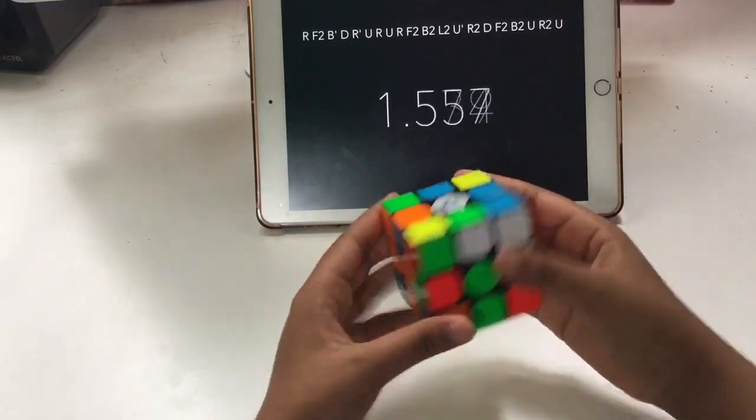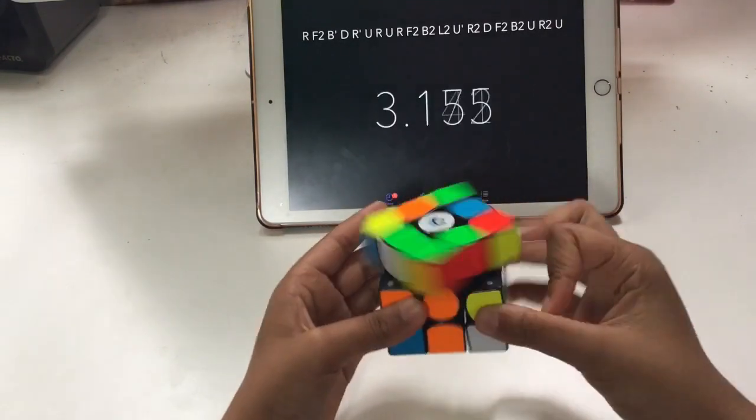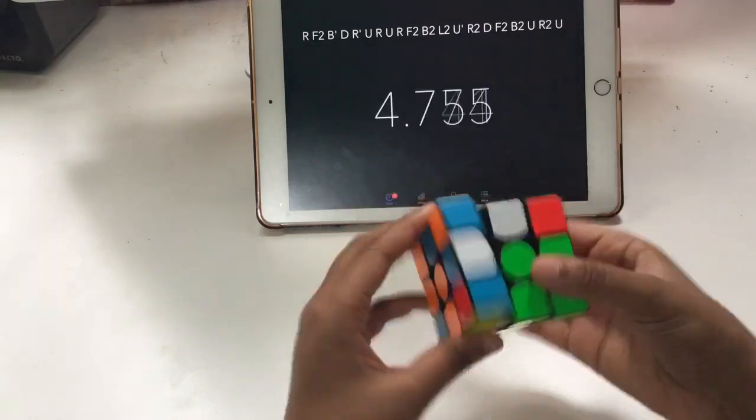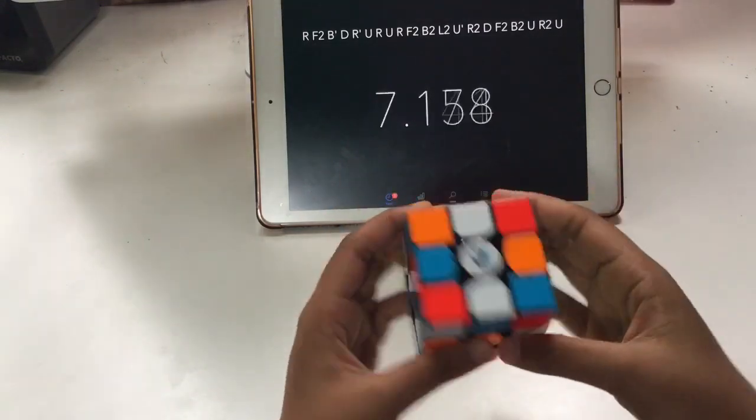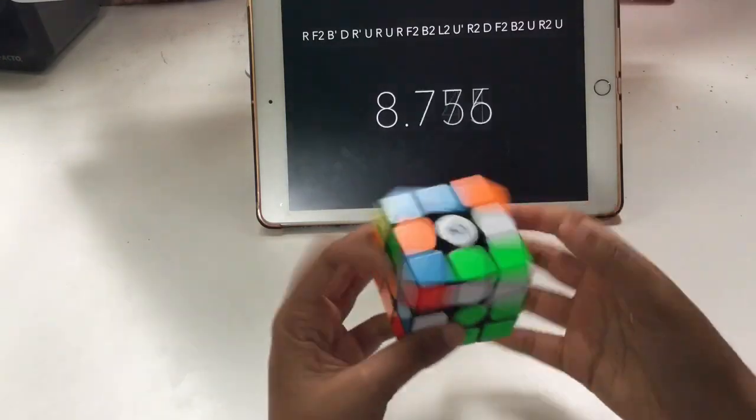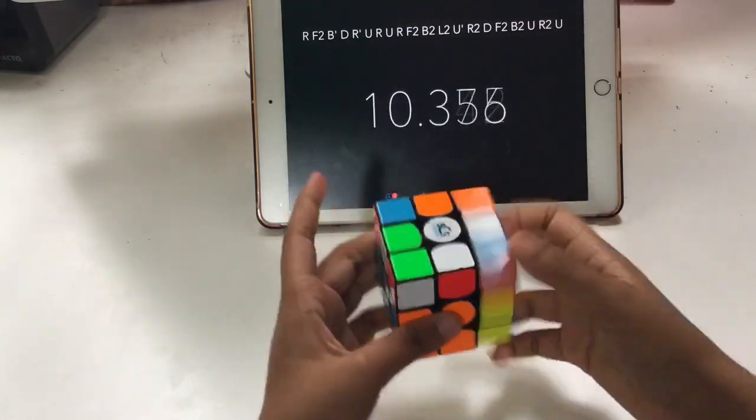If you're wondering, I'm currently sub 16.5 on the 3x3 with my PB being 10.252. So if you want any tips, please feel free to leave a comment down below.